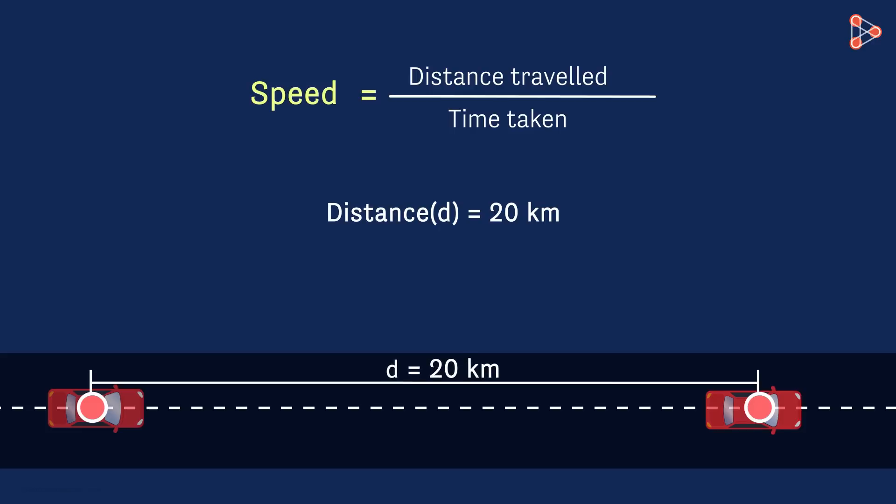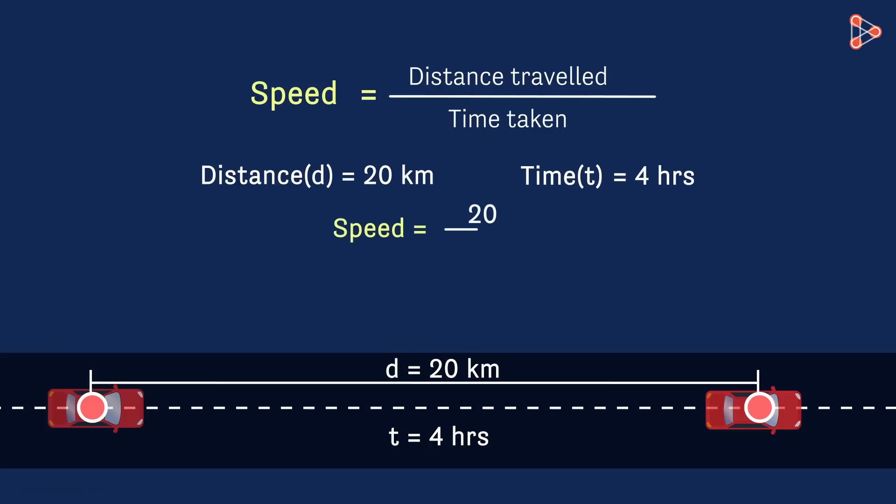Say the distance d is 20 kilometers and the time it takes to cover this distance is 4 hours. What will be the speed of the car then? Yes, the speed will be 20 over 4, that's 5 kilometers per hour.